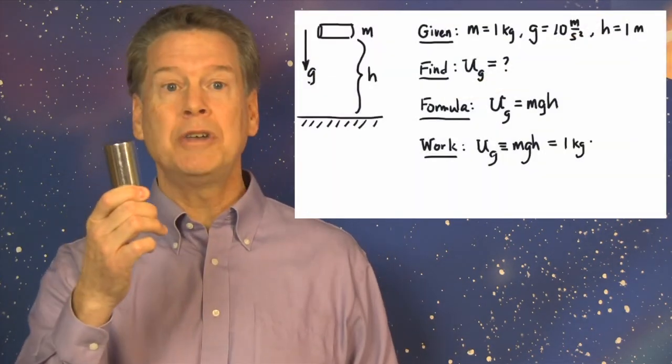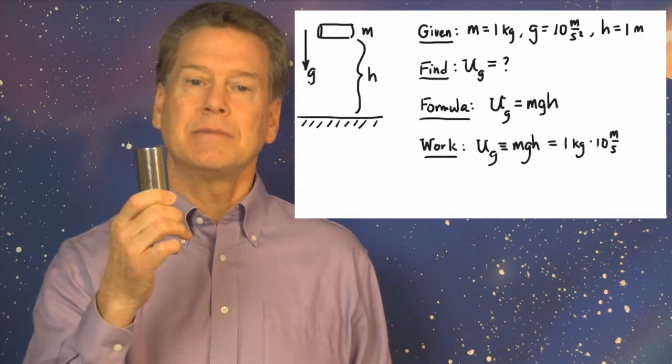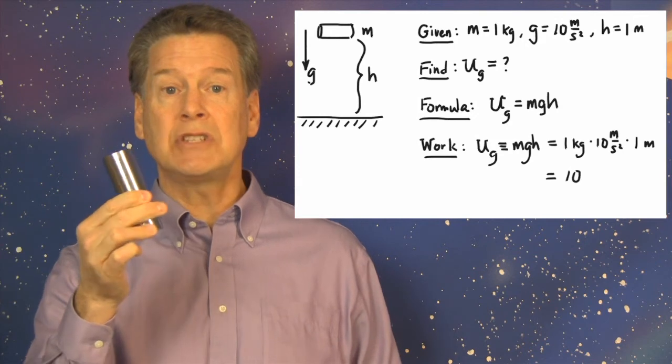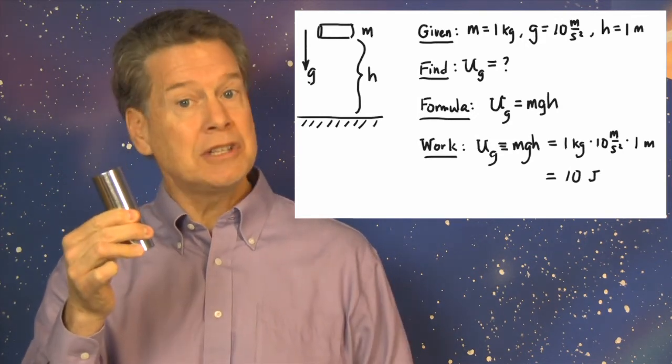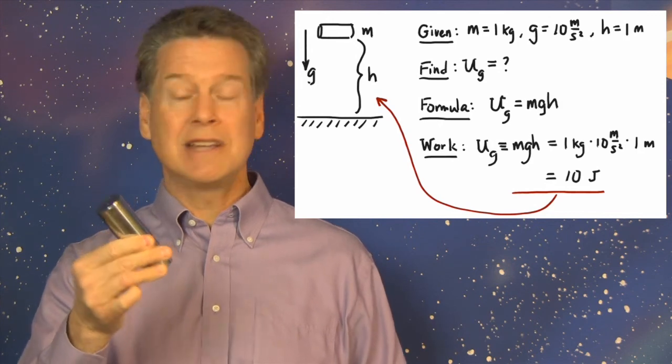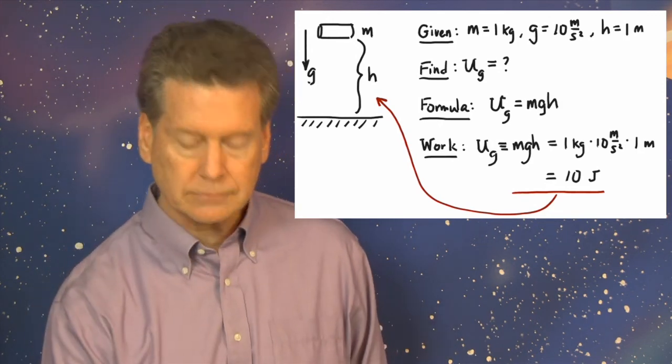Likewise, this kilogram at a height of one meter on Earth has M times G times H—it has about 10 joules of gravitational potential energy relative to the ground. But relative to the center of Earth, it has many millions of joules. This kind of relativity of potential energy and of kinetic energy does not diminish their usefulness.